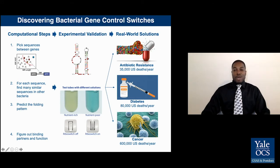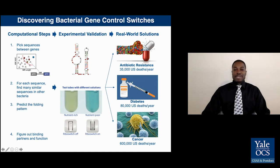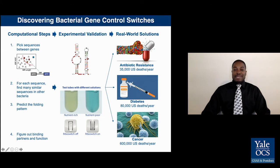These switches are made of RNA, which is the intermediate between DNA and protein. Except for riboswitch RNA, it does not code for protein. In humans, over 90% of all RNA does not code for proteins, but in bacteria, only 10% of RNA does not code for proteins. Since this was previously considered junk RNA, you could either say that I am looking for needles in a haystack or dumpster diving — but with bacteria, my haystack or dumpster is much smaller.